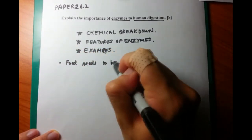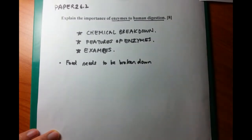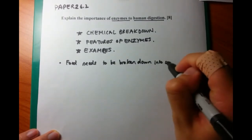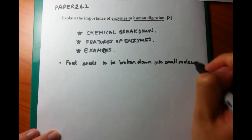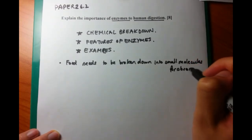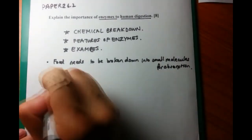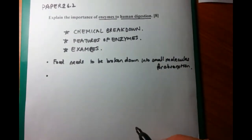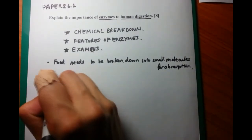Let's talk about chemical breakdown first. Why does food need to be broken down? It's because food needs to be small molecules so that it can be absorbed into the villi of the small intestine. Enzymes allow this chemical breakdown to occur. If there's chemical breakdown, however, there's also physical breakdown as well.